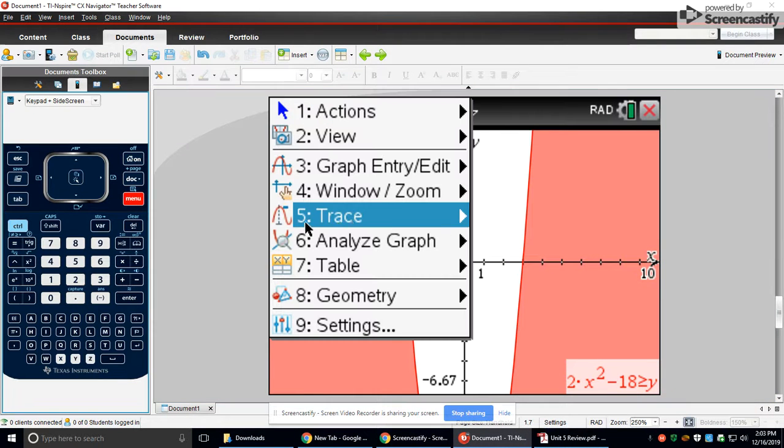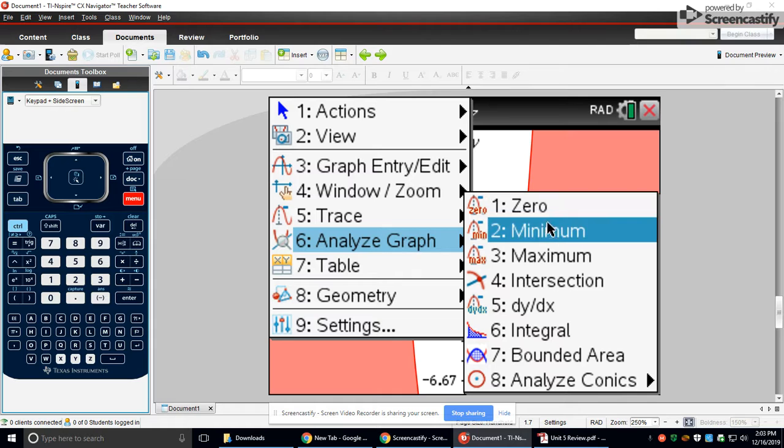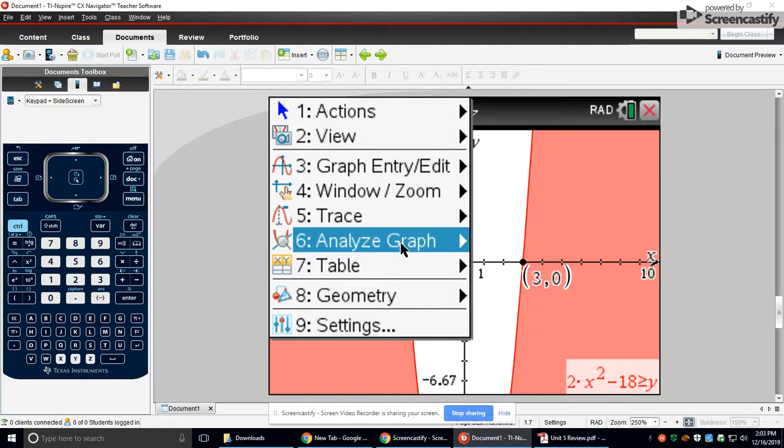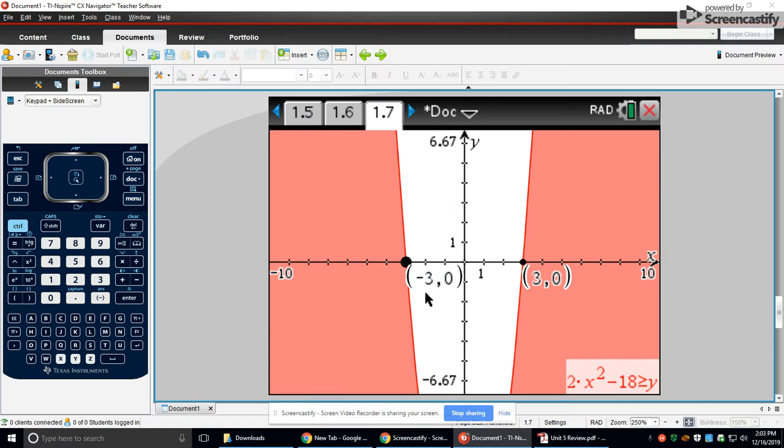And then you get this. So you need to find your boundary points. That's your x-intercepts. That's menu 6, 1. Click, highlight, click. Menu 6, 1. Click, highlight, click.